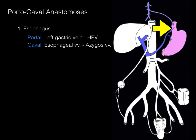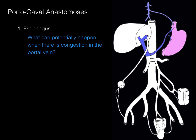Why do we care about this? What can potentially happen when there's congestion in the portal vein? Say cirrhosis of the liver, or a blood clot — regardless of the cause, blood becomes congested in the hepatic portal vein and pressure rises. We call this portal hypertension. That blockage causes blood to start flowing backwards, coursing retrogradely down tributaries — the splenic vein, superior mesenteric vein, and left gastric vein — reaching the distal esophagus.